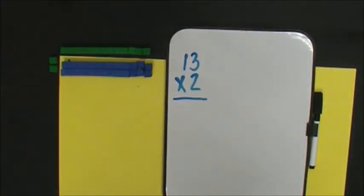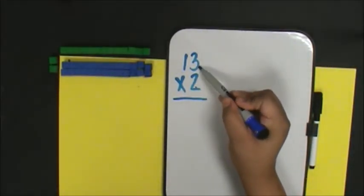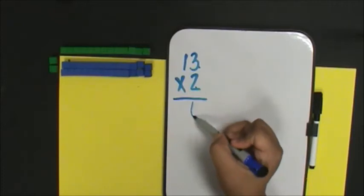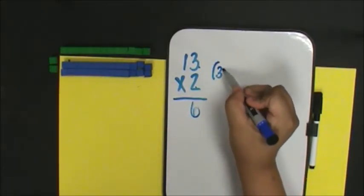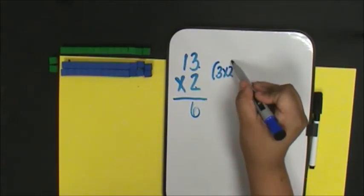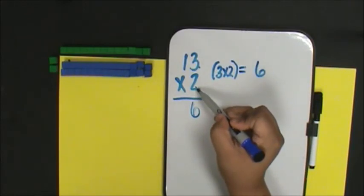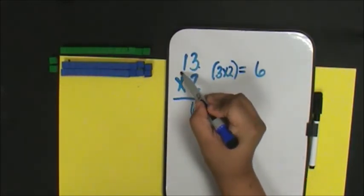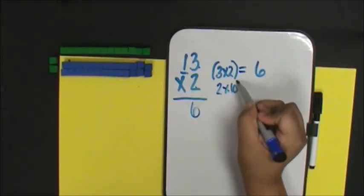Now let's multiply to find the partial products. 2 ones times 3 ones is 6 ones. 2 ones times 1 ten is 20.